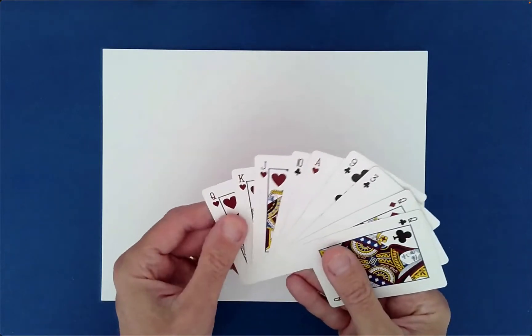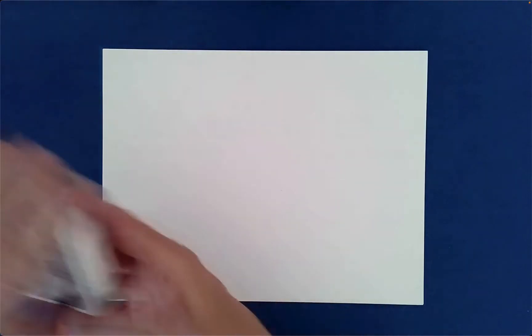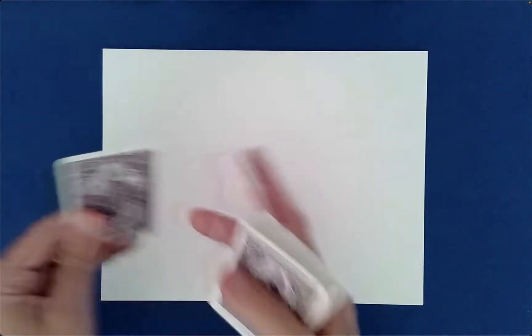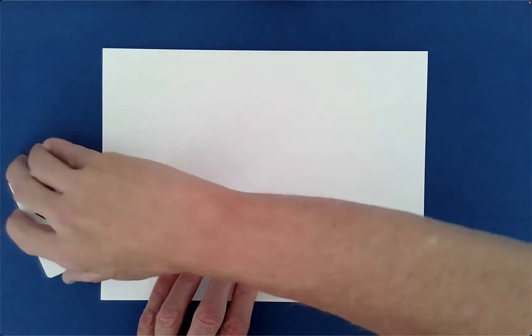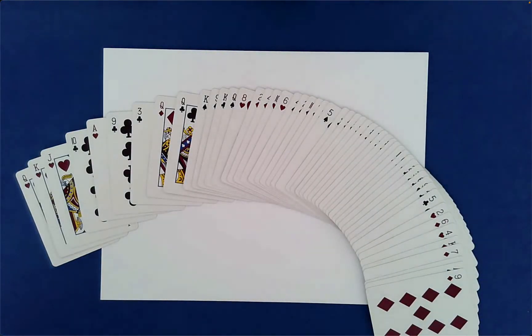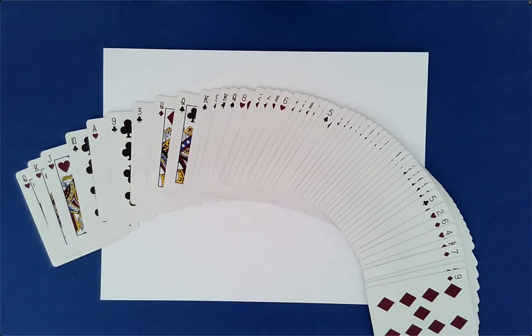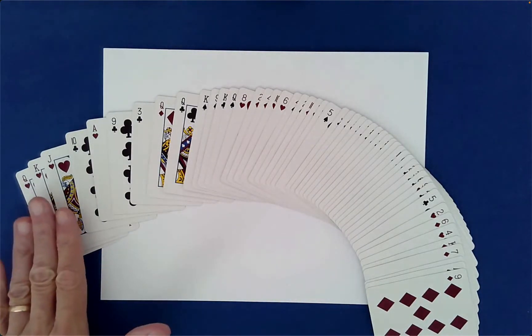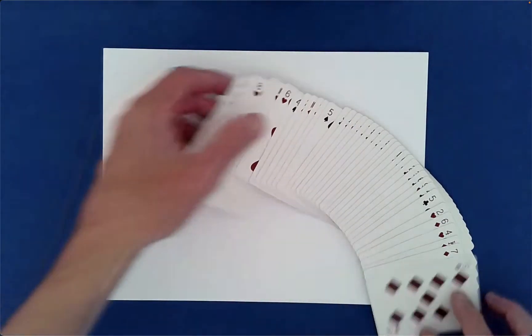We're not going to go into all of the whys, but what you need to do is simply, I'm just grabbing the deck over here, whichever three cards you decide, whatever three cards you want to reveal as a triple in the end, they need to go on top of the deck. So that's all I did. I just put the jack, queen, and king of hearts on top of the deck.